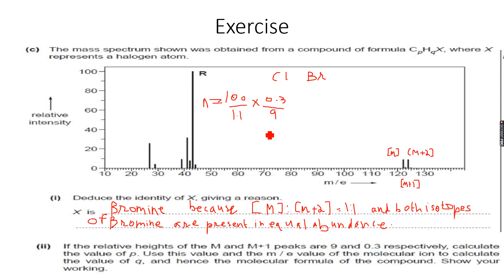Let me use my calculator to calculate this value of n. So I have 100 into 0.3 divided by bracket open 1.1 into 9 bracket closed, so I have 3.03.